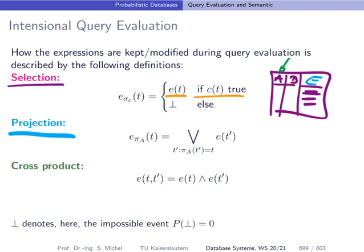This means we take these expressions that we find in the E column here, and we concatenate them or we combine them using a logical OR.